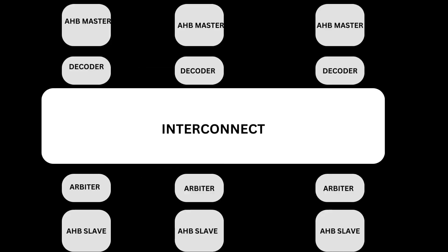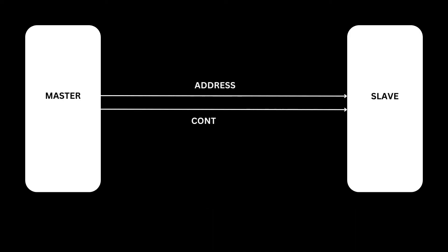An interconnect component provides the connection between masters and slaves in a system. A multi-master system requires the use of an interconnect that provides arbitration and the routing of signals from different masters to the appropriate slaves. This routing is required for address, control, and write data signaling. The master starts a transfer by driving the address and control signals, which provide information about the address, direction, width of the transfer, and indicate if the transfer forms part of a burst.